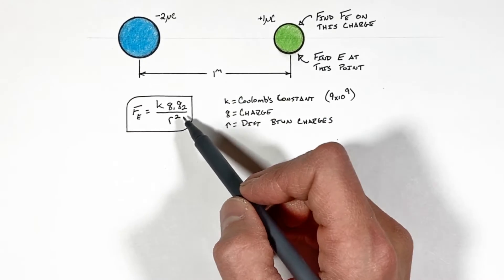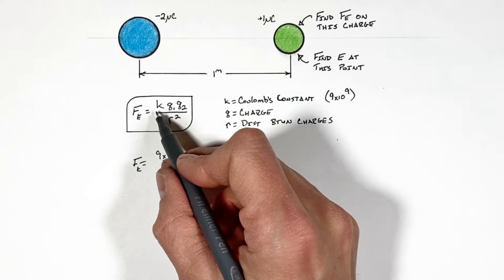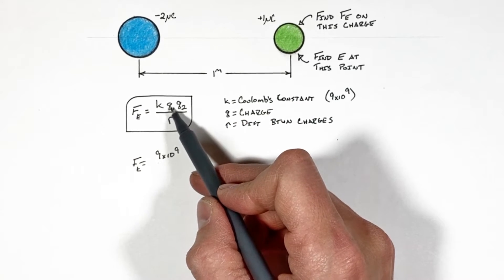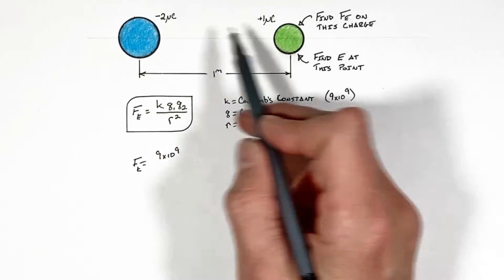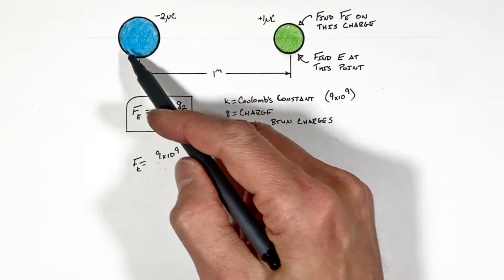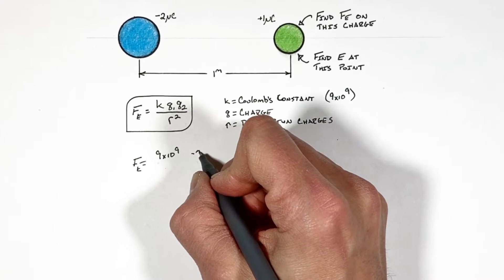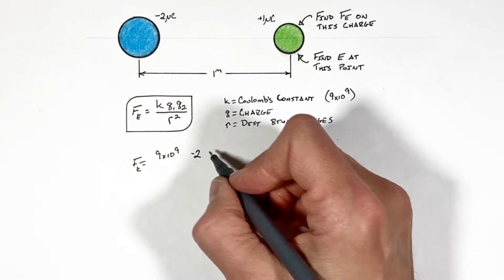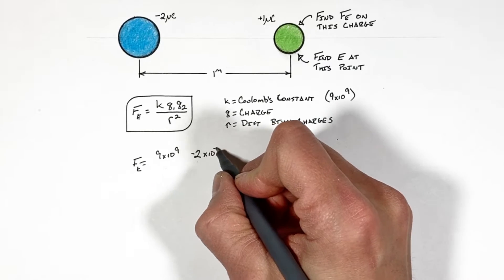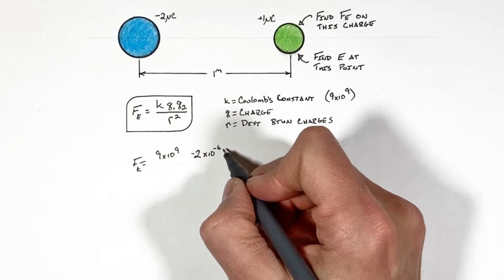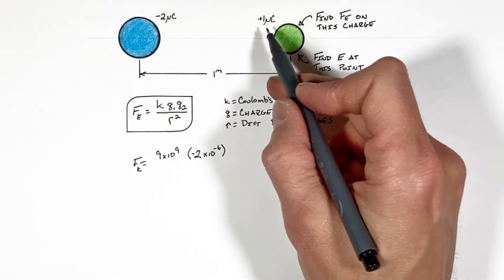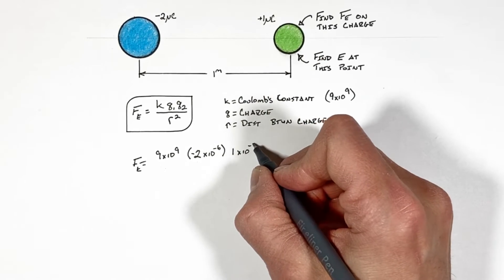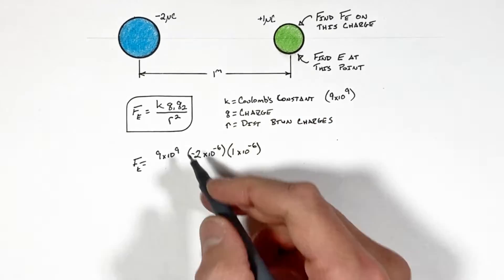So to solve for the force between these two charges we simply plug the values in the problem into Coulomb's law, starting with k, that's nine times ten to the ninth, multiplied by the value of one of the charges. Which one we use first really doesn't matter, I'll do this one, it's negative two. This little u right here, or mu, that's micro, that means times ten to the negative sixth coulombs.